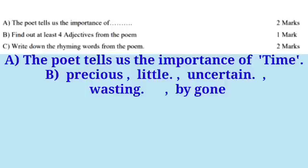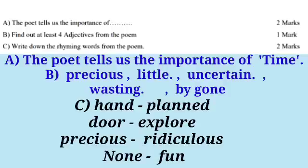Second: Find out at least four adjectives from the poem. The answers are: precious, little, uncertain, wasting, bygone. See question: Write down the rhyming words from the poem. The rhyming words from the poem are: hind, plan, door, explore, precious, ridiculous, none, fun.